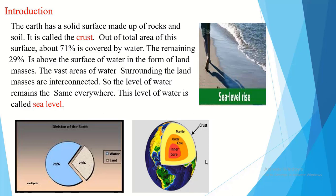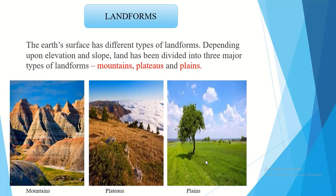Now we are moving to landforms. The surface of the earth is not the same everywhere. Some parts are elevated higher than the surrounding area. Some are rugged and others are flat. In other words, the earth's surface has different types of landforms. Depending upon elevation and slope, land has been divided into three major types: mountains, plateaus and plains.